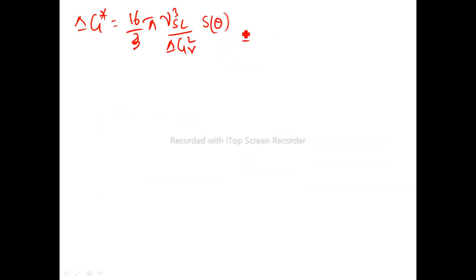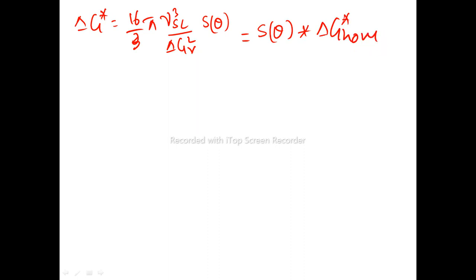This expression can also be written in terms of the homogeneous free energy: delta G* heterogeneous equals S(theta) multiplied by delta G* homogeneous. This means that the free energy of heterogeneous nucleation will be S(theta) times that of the free energy of homogeneous nucleation.